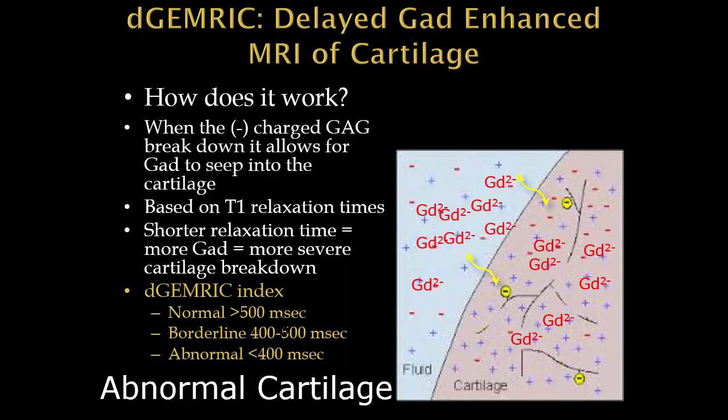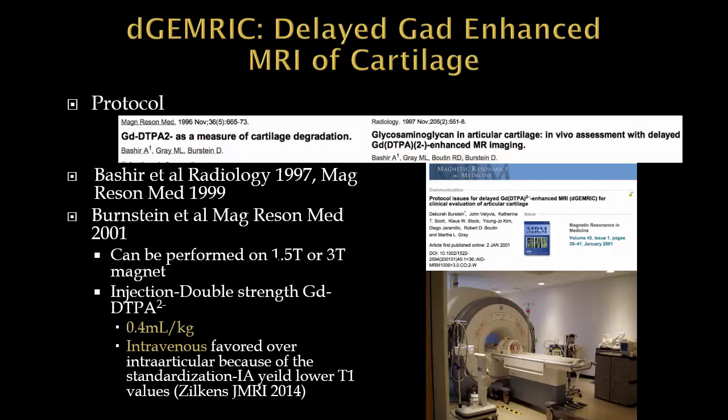In abnormal cartilage with early glycosaminoglycan breakdown, after gadolinium flows into the synovial space, there's less negative charge repelling it, so more gadolinium flows into the cartilage. The dGEMRIC index is based on T1 relaxation times — a shorter T1 relaxation time means more gadolinium, meaning more severe cartilage breakdown. A normal dGEMRIC index is generally greater than 500 milliseconds; abnormal is generally less than 400 milliseconds.